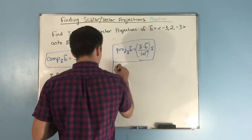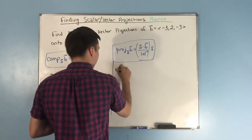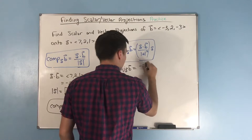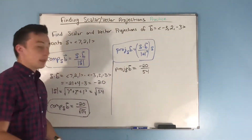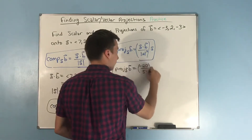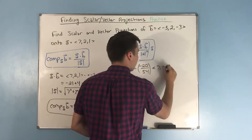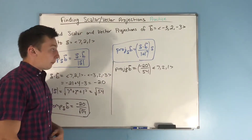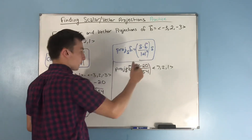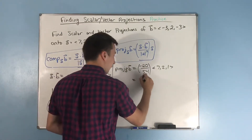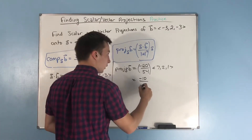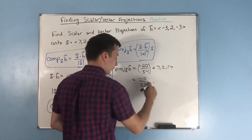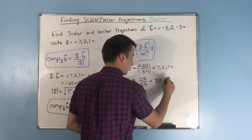So the projection is going to equal negative 20 over 54 — no square root now because we squared it — multiplied by the vector (7, 2, 1). Before we multiply through, we can simplify a little bit to get negative 10 over 27, times the vector (7, 2, 1).